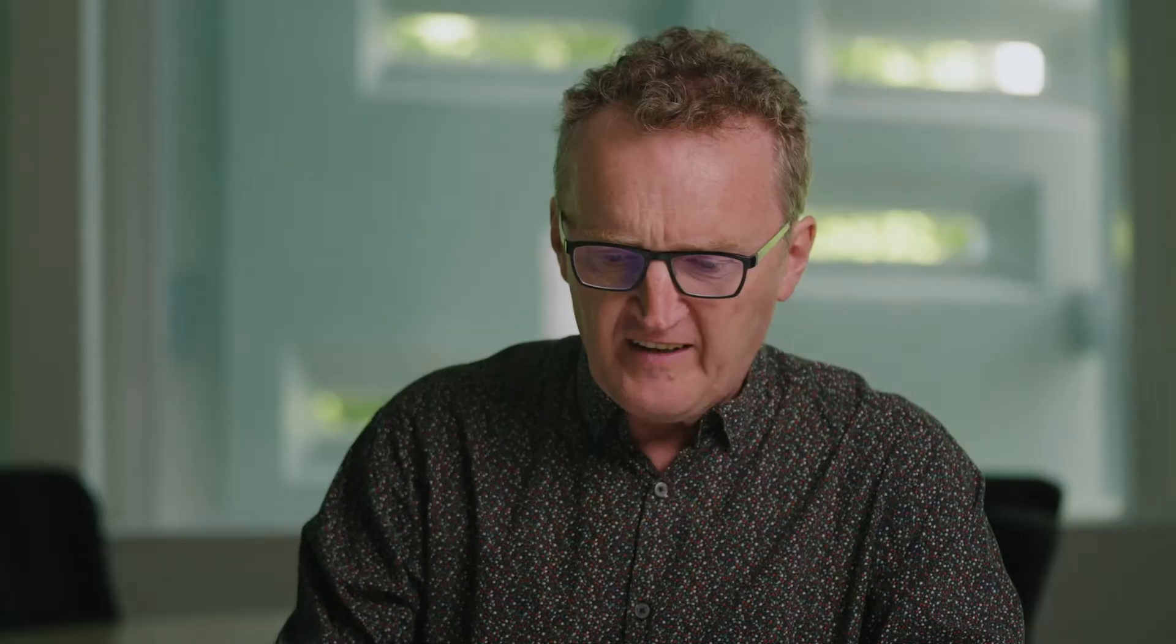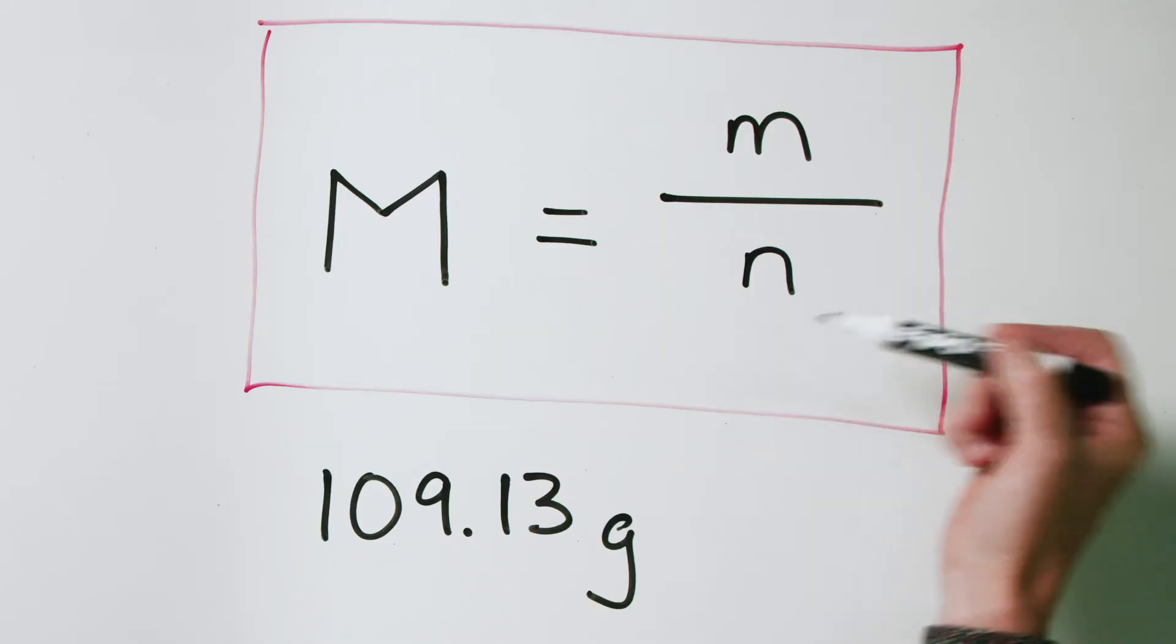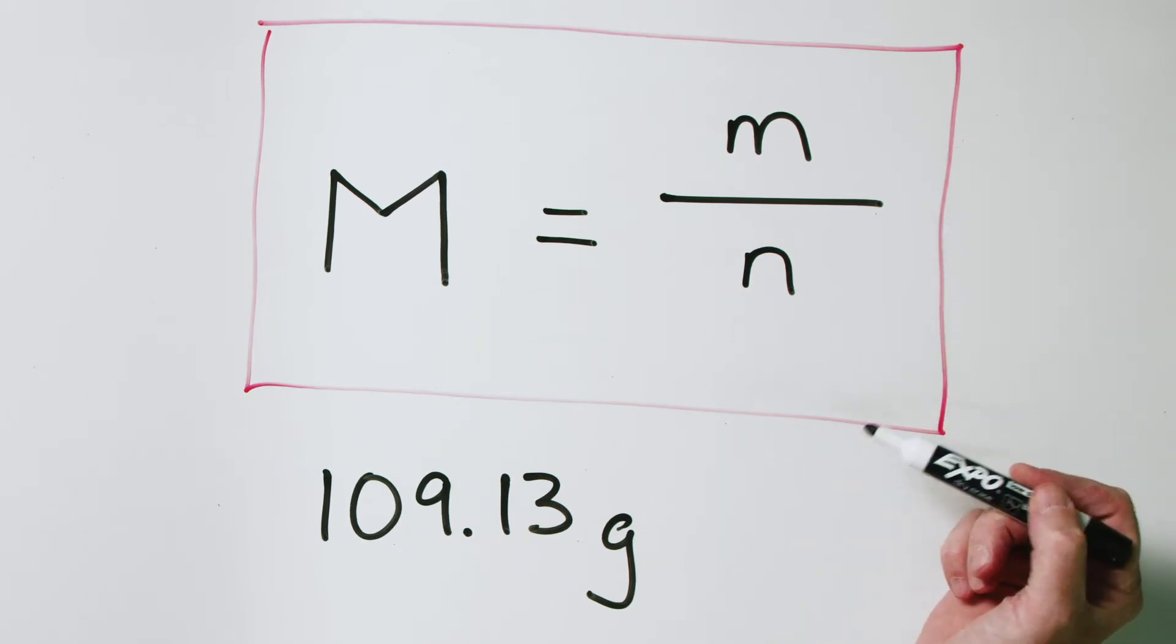Let's use this equation in a real-life example. We're going to talk about the world's biggest faceted diamond, the Golden Jubilee diamond, which has a mass of 109.13 grams. That's a lot of diamond. As you know, diamond is pure carbon. The question becomes: what amount of carbon is contained in this 109.13 grams? Or what number of moles of carbon does this correspond to? We're going to use this equation: big M equals little m upon n.